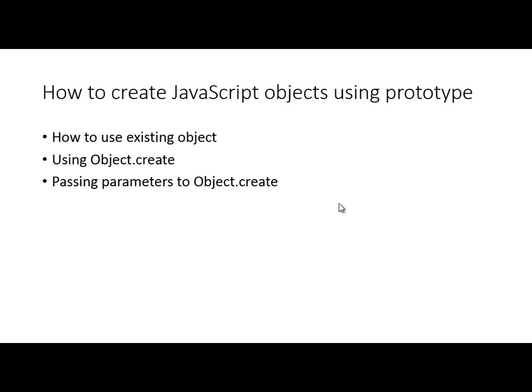In this video we learnt how to create JavaScript objects using prototype. We learnt how we can use an existing object with object.create and how to pass different parameters to object.create. For any updates feel free to follow me on Twitter — that is debug_mode — and my blog is debugmode.net. I hope you find this video useful. Thanks for watching.